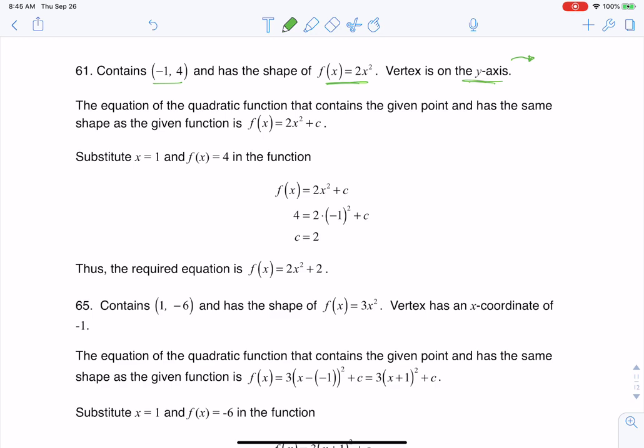The vertex is on the y-axis. Anytime I have a vertex on the y-axis, that means the x-coordinate is going to be 0, because every ordered pair on the y-axis has an x-coordinate of 0. So I'll call that (0, k).